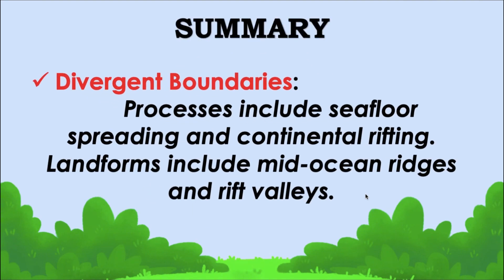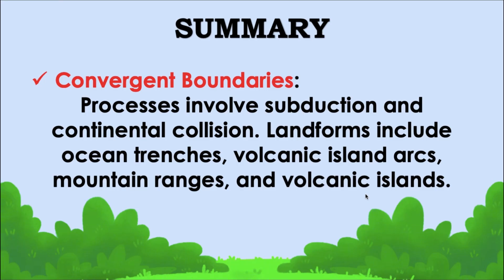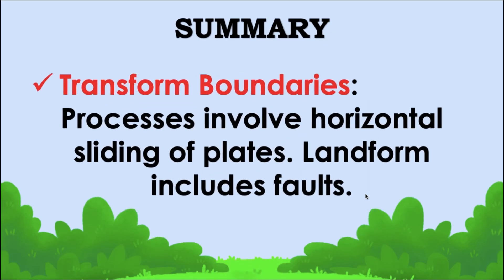Divergent boundaries: processes include seafloor spreading and continental rifting; landforms include mid-ocean ridges and rift valleys. Convergent boundaries: processes involve subduction and continental collision; landforms include ocean trenches, volcanic island arcs, mountain ranges, and volcanic islands. Transform boundaries: processes involve horizontal sliding of plates; landform includes faults.